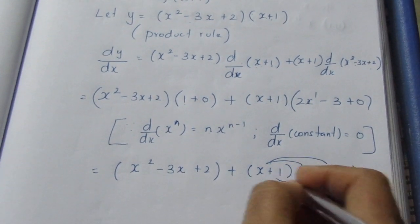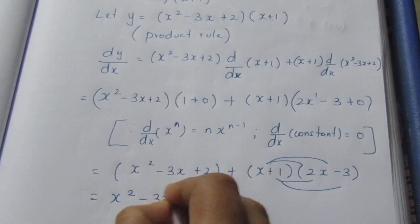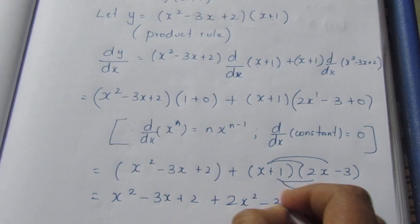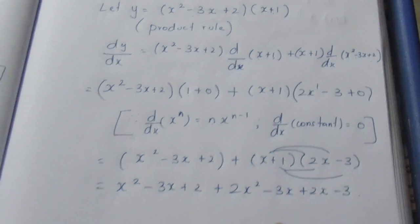Multiplying the binomials: x² - 3x + 2 + 2x² - 3x + 2x - 3. Now we solve like terms.